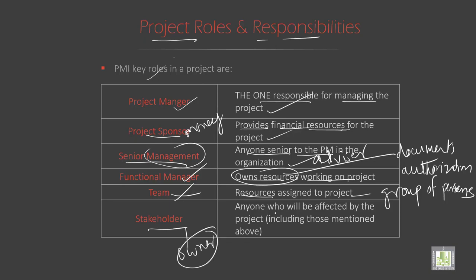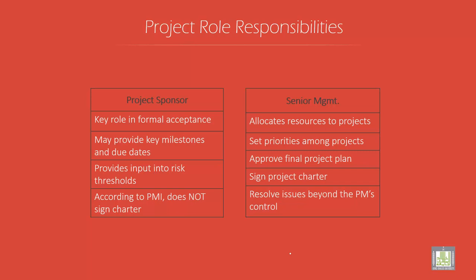The stakeholder is the owner — anyone who will be affected by the project, including those mentioned above. The stakeholder has more responsibility on budget and money issues, and will be affected if there is any termination in the project.